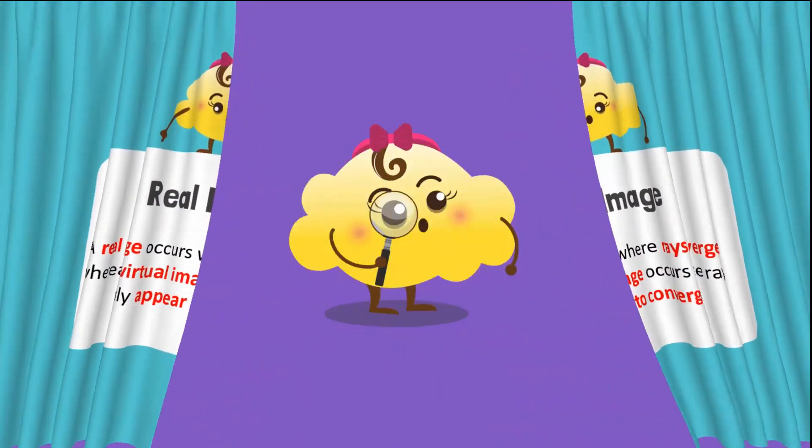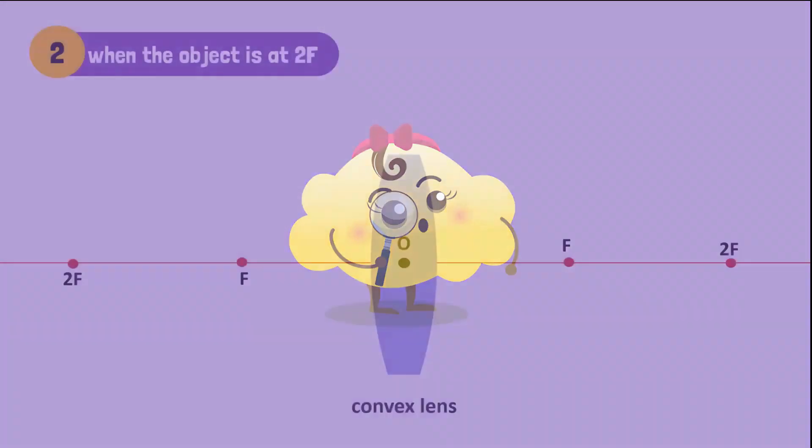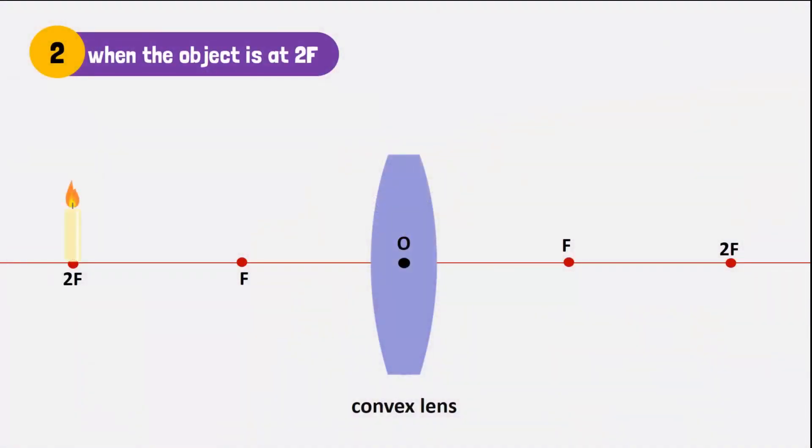Let's take a closer look at other cases and see. Now let's place the candle at 2F and see what happens. You'll notice the rays go through a similar refraction. However, they converge at a different distance.